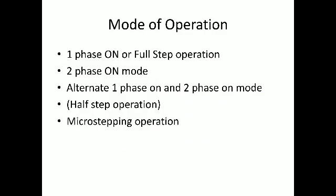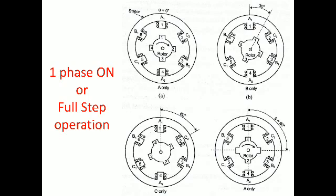There are four types of operating modes. The first is one-phase on, also called full step. The second is two-phase on, also called full step. The third is alternating one-phase on and two-phase on mode, also called half step. The first and second are full step; the third is half step. The fourth and last one is micro step, which means a very minimum movement of the rotor.